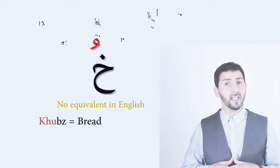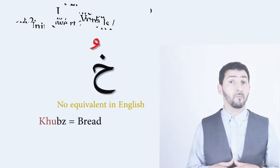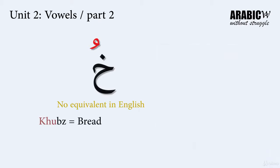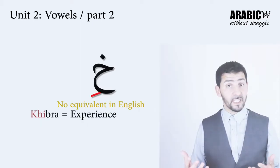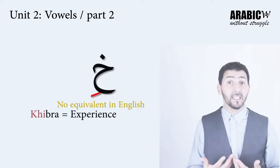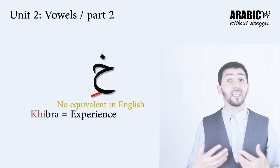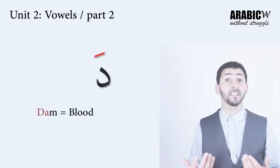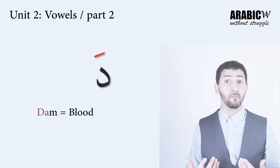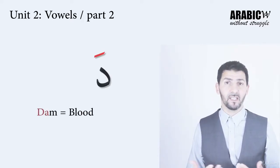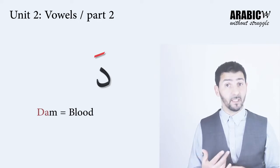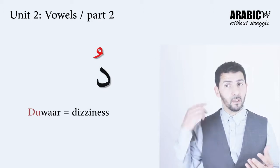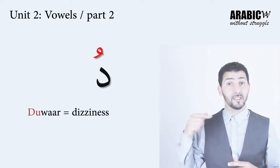خاء with ضمة makes خو, like خبس. خاء with كسرة makes خي, like خبرة — meaning 'experience'. دال with فتحة makes دا, like دم or بلاد. دال with ضمة makes دو, like دوار — meaning 'spinning' or 'dizziness'.